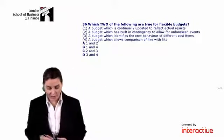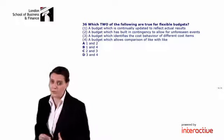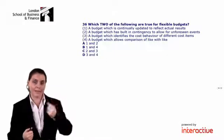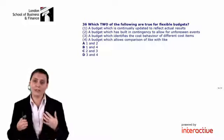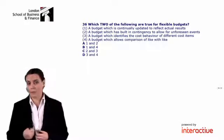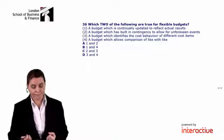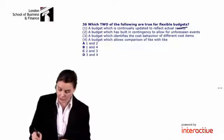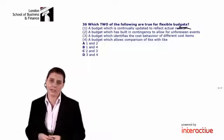The first question is just theory - we're asked which two of the following are true for flexible budgets. A flexible budget is one where we take our original budget and adjust it for any difference between our budgeted level of activity and our actual level of activity. By doing that we are reflecting the fact that our variable costs and sales revenue will change based on our level of activity. Option A - is a flexible budget one that is continually updated to reflect actual results? No. A flexible budget is one where at the end of the period we adjust it only for changes in the level of activity.